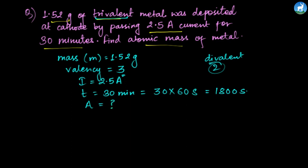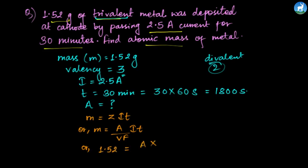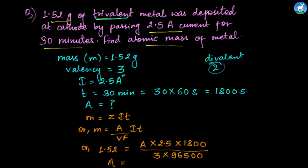Using Faraday's Law: M equals A by VF into I into T. Substituting: 1.52 equals A by 3 into 96,500 into 2.5 into 1800. Solving for A, the atomic weight comes out to be 97.78. So the atomic mass of the metal is 97.78.